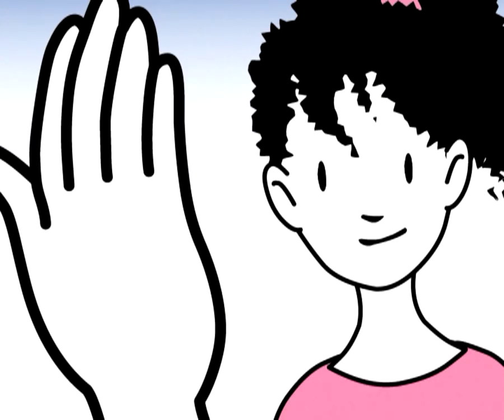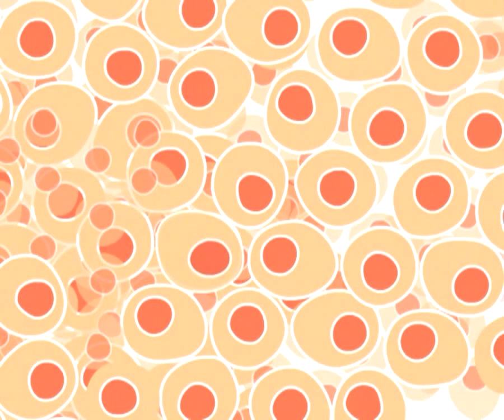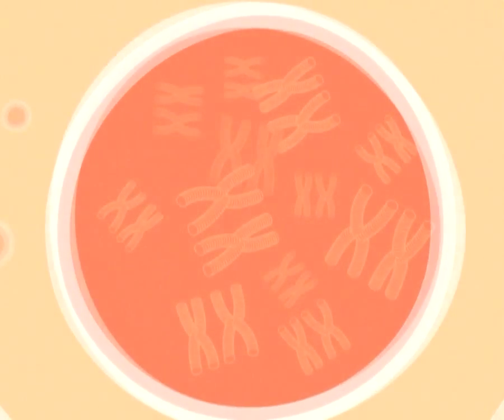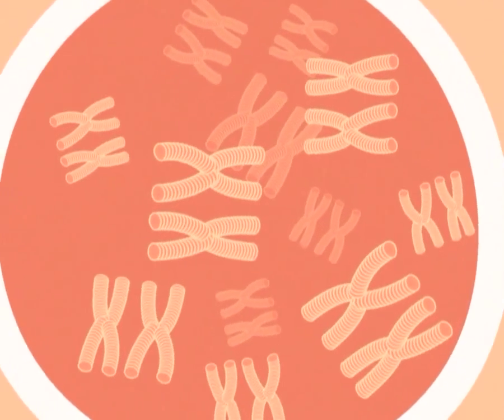Closer. Closer. Closer still. Right, now you are looking at the cells which make up my body. Let's take a look in the middle of one. You can now see 46 chromosomes.